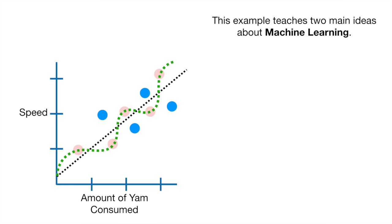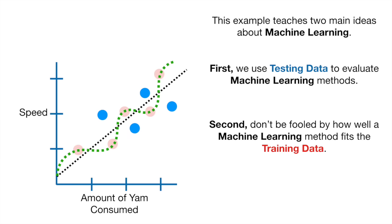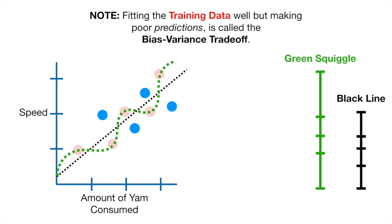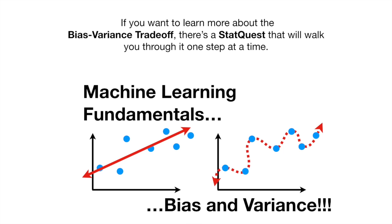This example teaches two main ideas about machine learning. First, we use testing data to evaluate machine learning methods. Second, don't be fooled by how well a machine learning method fits the training data. Note: fitting the training data well but making poor predictions is called the bias-variance trade-off. If you want to learn more, there's a StatQuest that will walk you through it one step at a time.